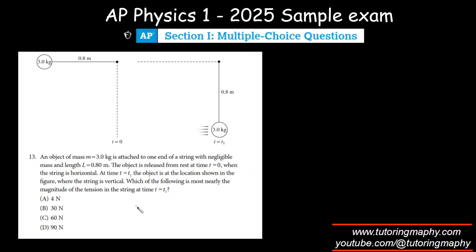An object of mass 3 kilograms is attached to one end of a string with negligible mass and length of 0.8 meters. The object is released from rest at t=0 when the string is horizontal. At t=t1, the object is at the location shown when the string is vertical. Which is most clearly the magnitude of the tension in the string at time t=t1?